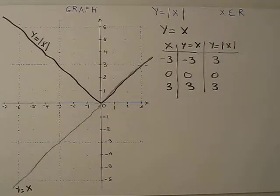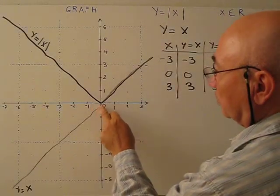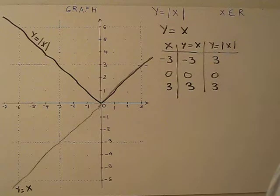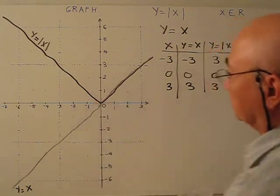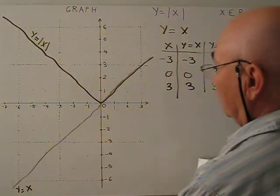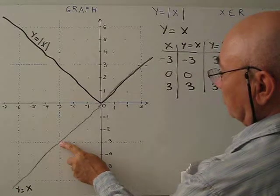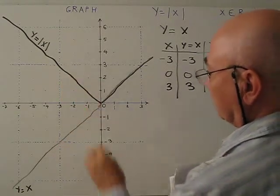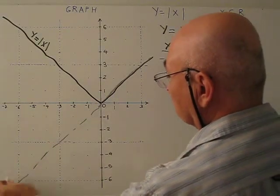Another way to graph this absolute value function: reflect the portion of the graph below the X-axis up onto the X-axis. Basically, we fold this part upward, so the Y coordinate of that point changes — negative 3 becomes positive 3. Let's draw a dotted line to show this.